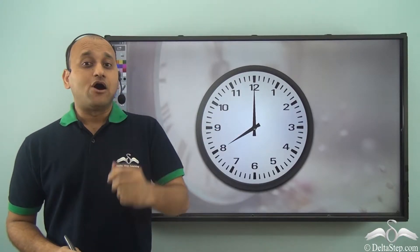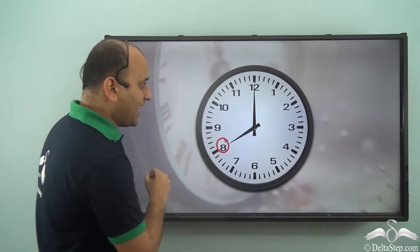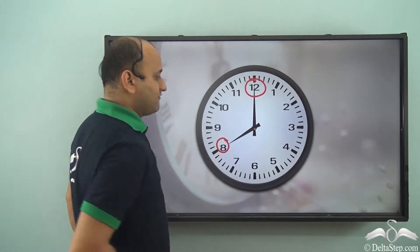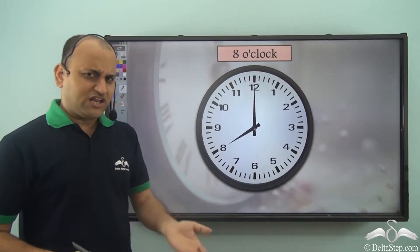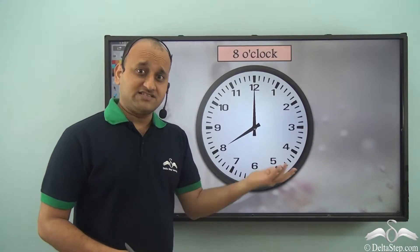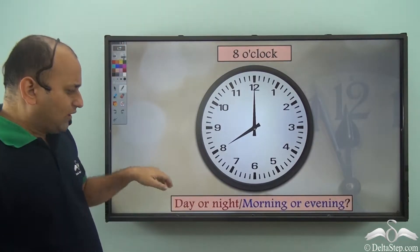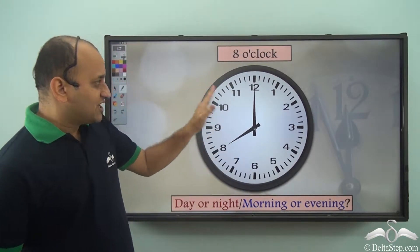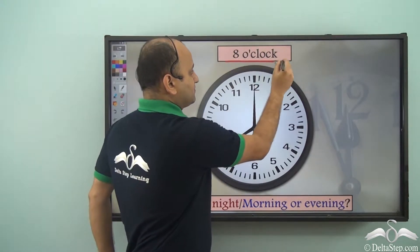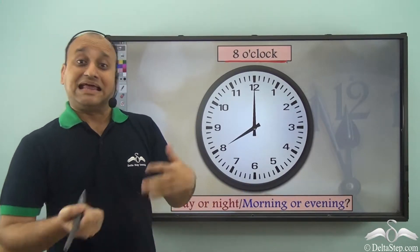This is a clock and you have learned how to read a clock. So can you tell me what time it is? Well, the hour hand is pointing to 8 and the minute hand is pointing to 12. So the time is 8 o'clock. But what if I ask you what time of the day it is? If it is 8 o'clock, is it morning or is it evening — day or night?